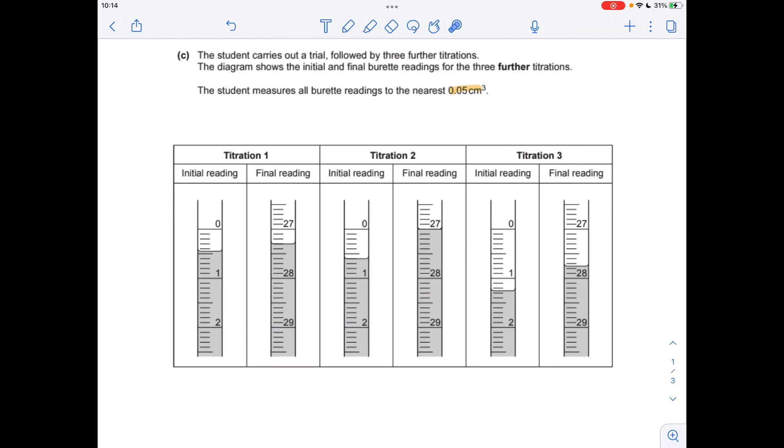Okay, so moving on to part C, we've got to turn these images into actual results for the results table. So rule of thumb here, if the meniscus is between the lines, it's going to be something point something 5. If it's on the line, it's something point something 0.